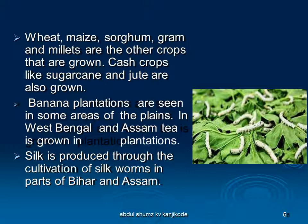The density of population is much higher in the plains. The main crop grown here is paddy, since cultivation of paddy requires a lot of water and rainfall is high in these areas. Wheat, maize, and millets are also grown. Cash crops like jute and sugarcane are grown as well. Banana plantations are seen in some areas of the plains. In West Bengal and Assam, tea is grown and silk is produced through cultivation of silkworms in parts of Bihar and Assam. In mountains and hills where slopes are gentle, crops are grown on terraces.